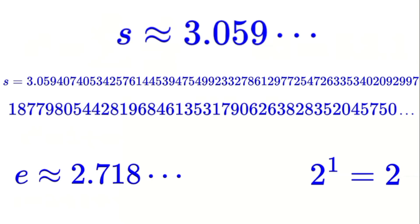You can see that S to the power of X grows faster than 2 to the power of X, but slower than e to the power of X. This intermediate growth rate is one of the key features of the improved S-function.